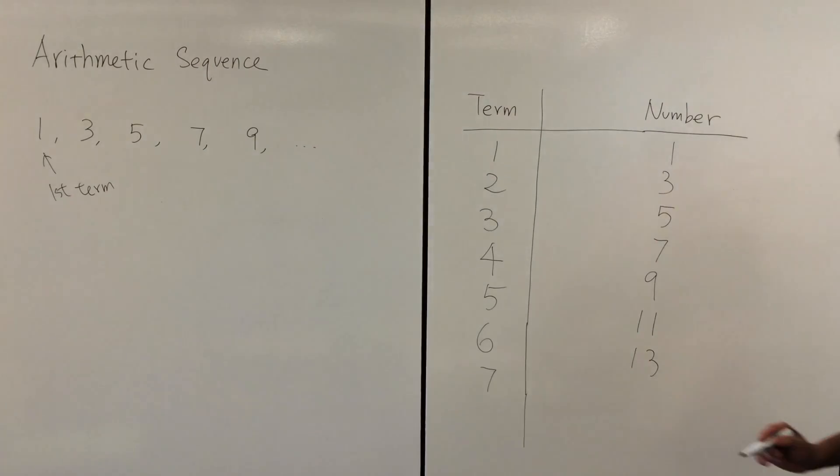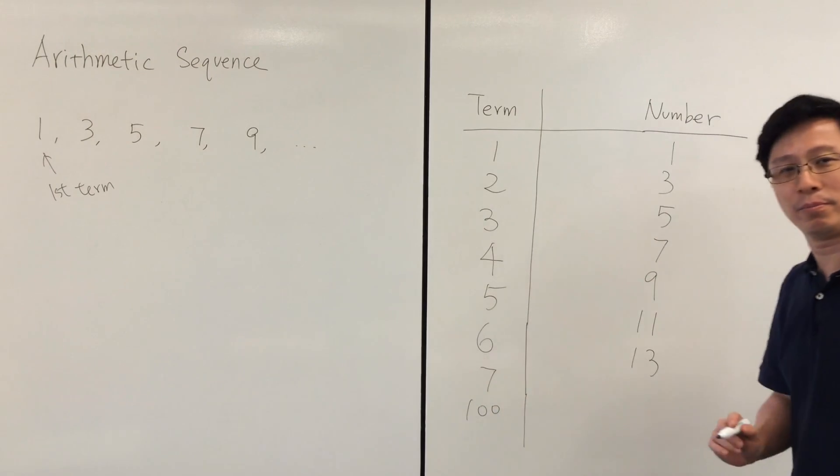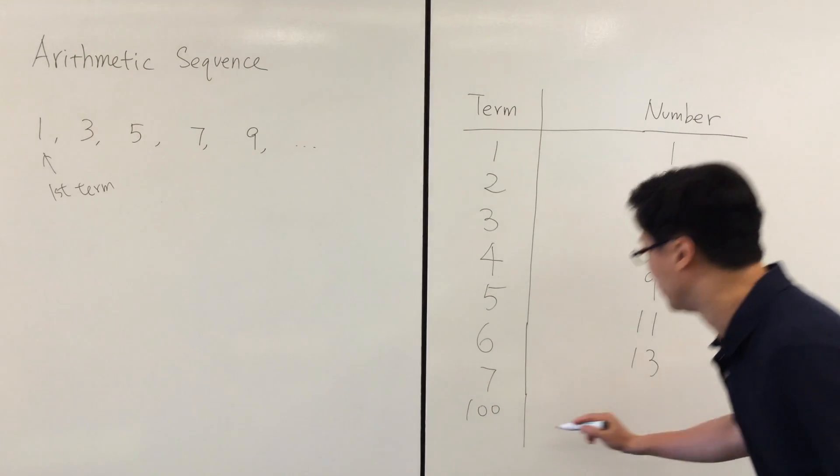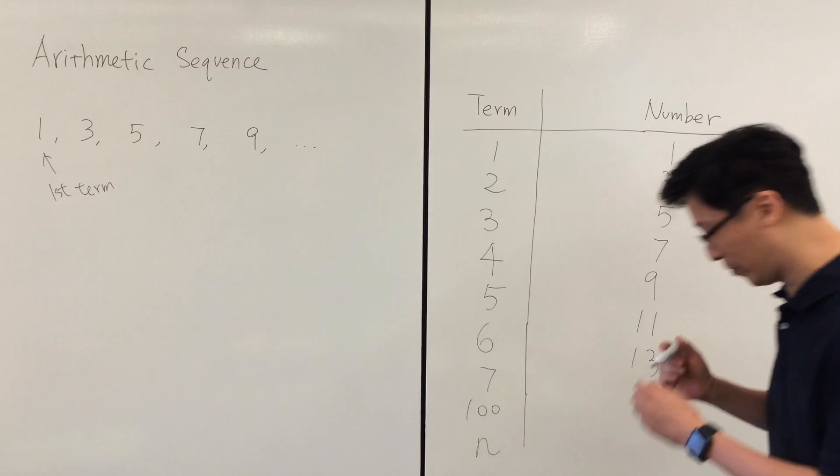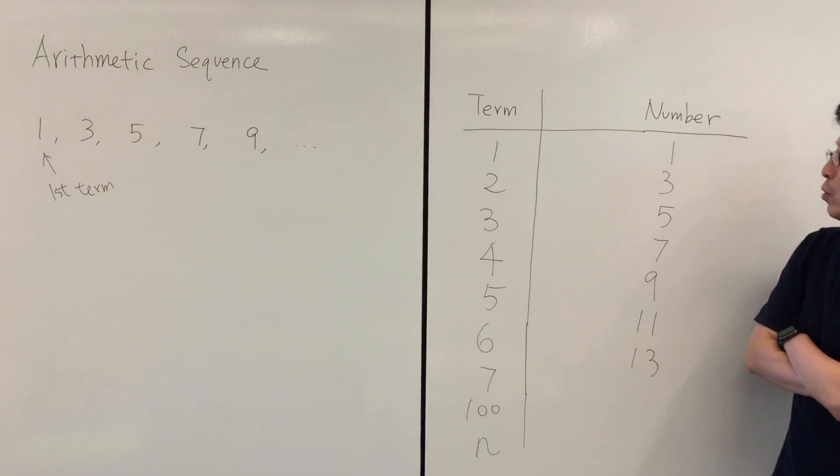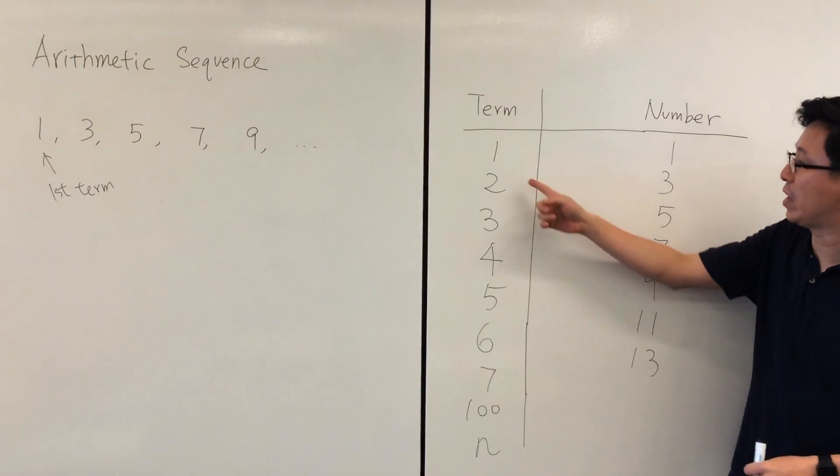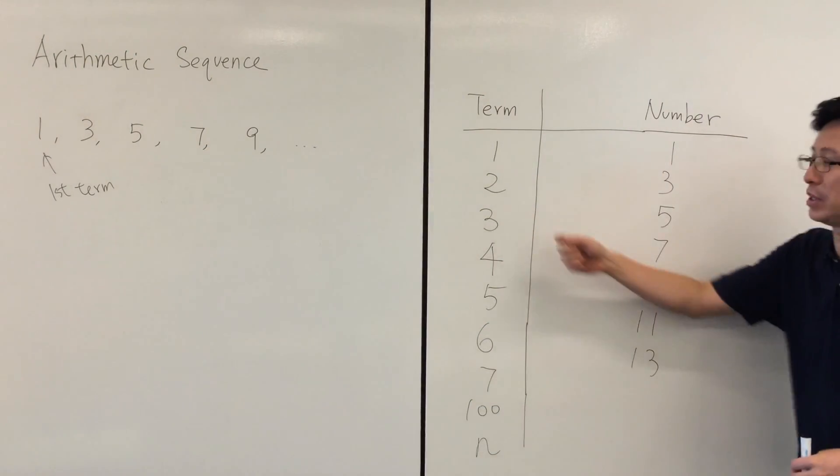But it will be quite difficult to find the 100th number or the nth number because we need to find the relationship between the term number and the number itself. So how can we find the relationship between these two columns of numbers?